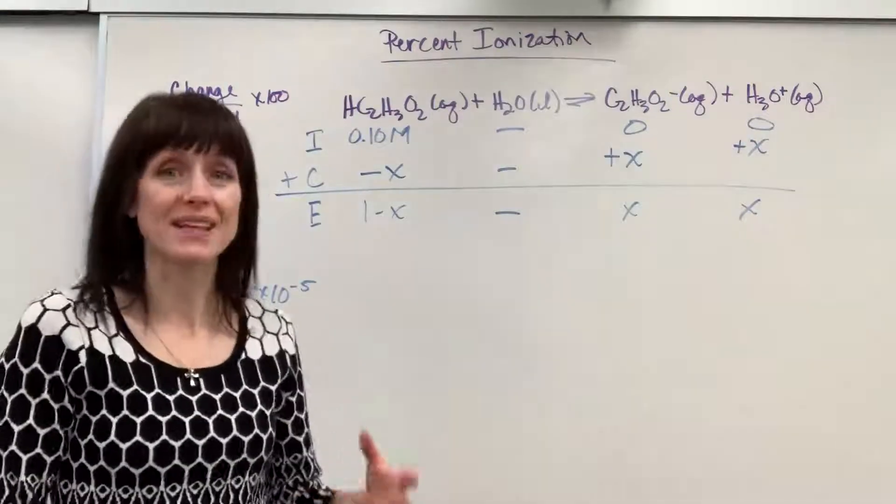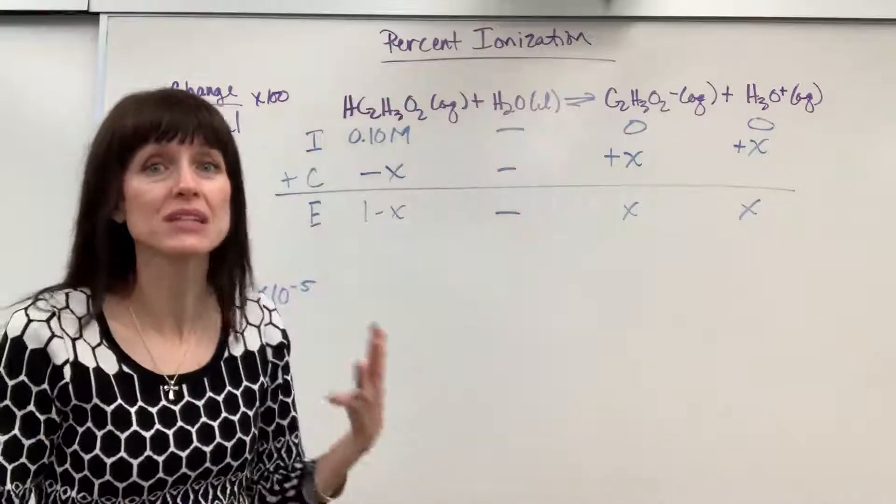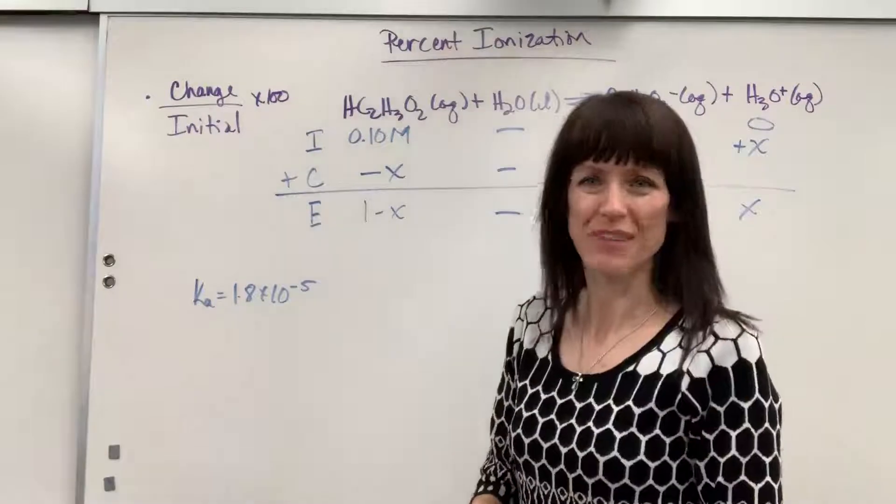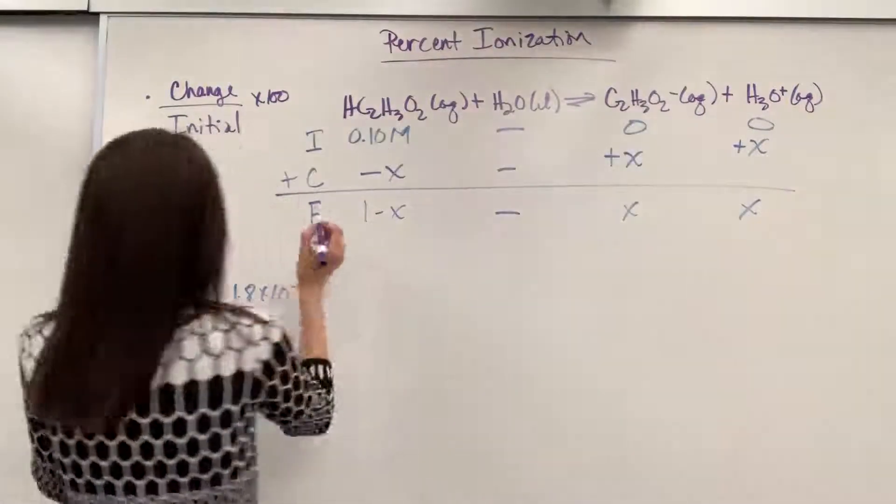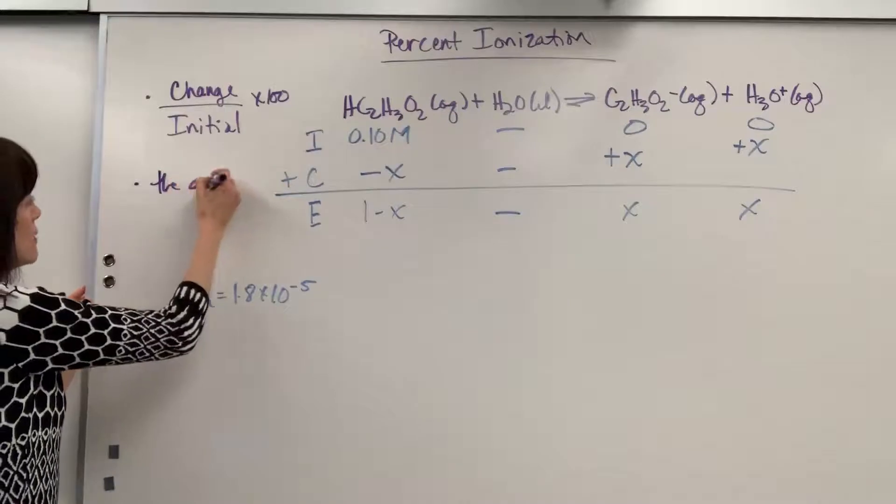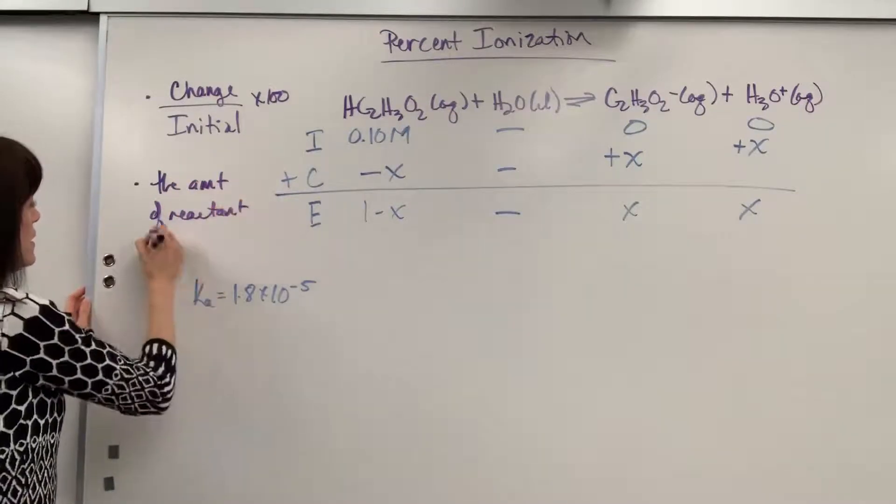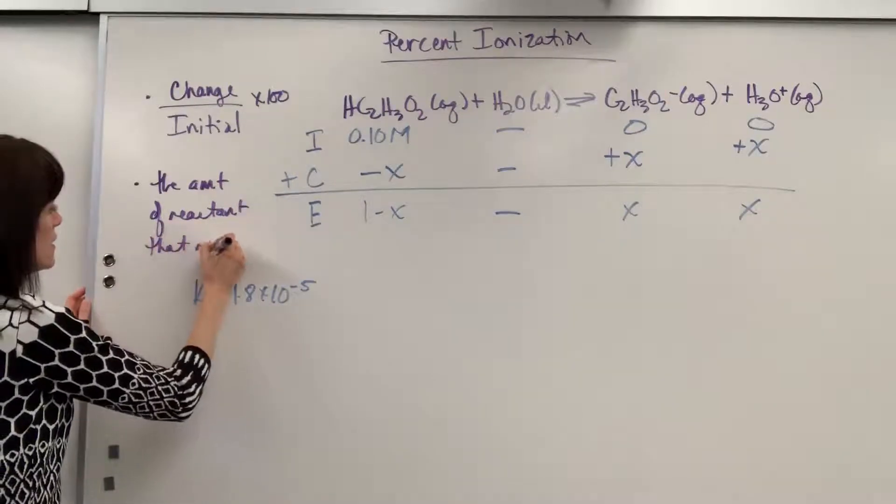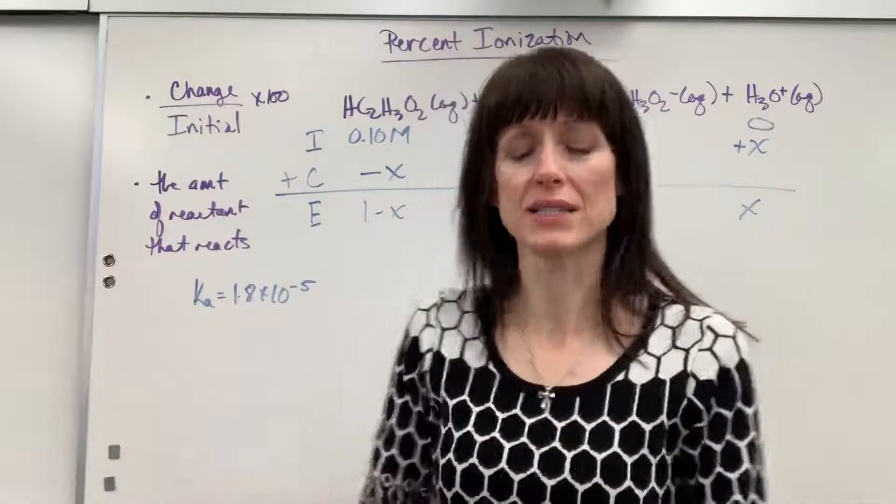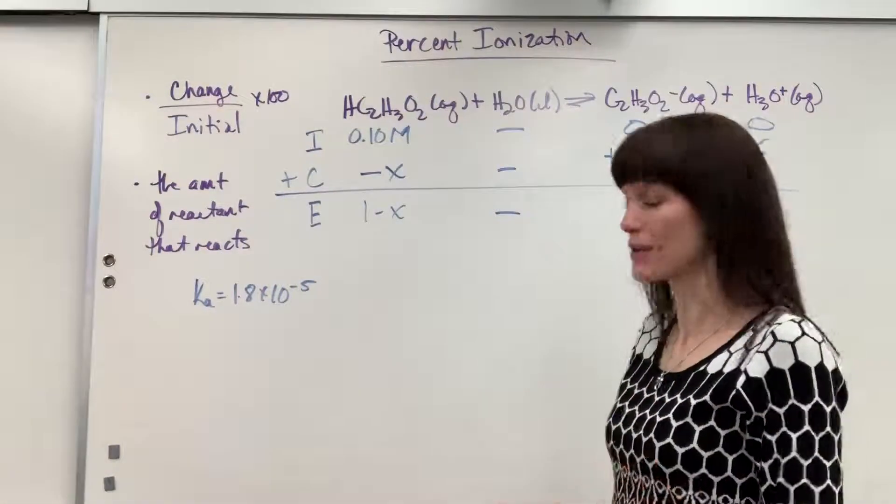So I've written a little formula for you. We want to know the percent that ionizes, the amount of this that breaks apart. That's really what they're asking. Let me write it down in purple as one of our takeaways. Percent ionization is going to be the amount of reactant that reacts. That's really what they're asking when they say what's the percent ionization. How much of that is going to ionize? How much is going to break apart, react with that water?